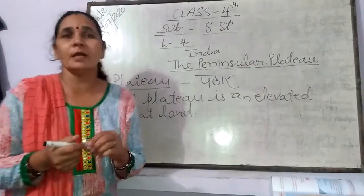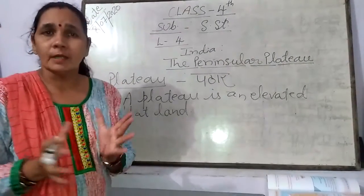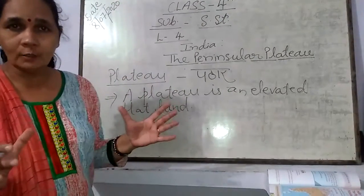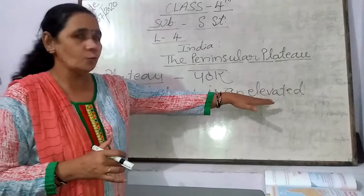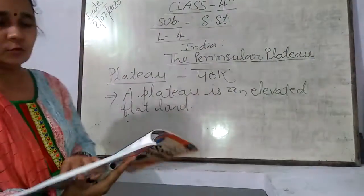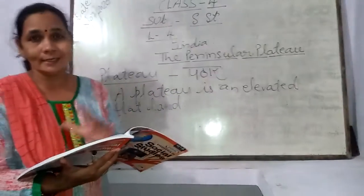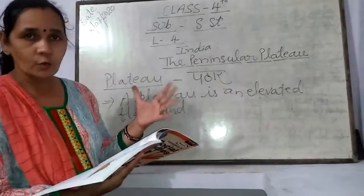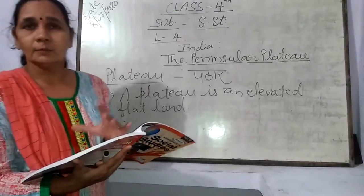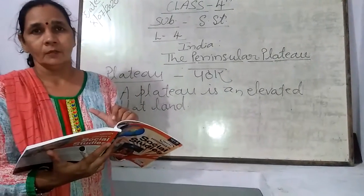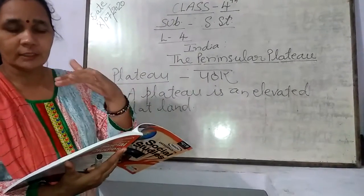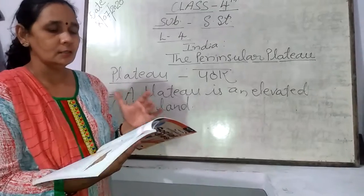How is the shape of Pathar? The base is flat and from the upper side it is elevated, meaning raised up. So like a table — a plateau is an elevated flat land. The base of the table is flat and the upper surface is raised, standing on a raised surface. So we can describe it like a table.